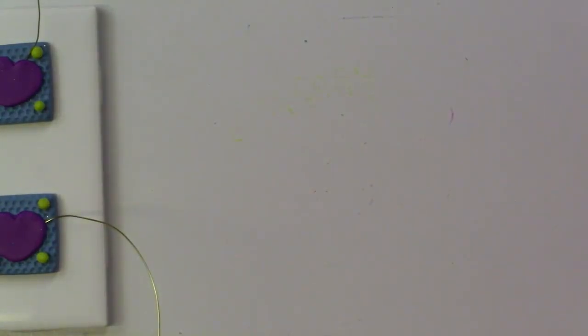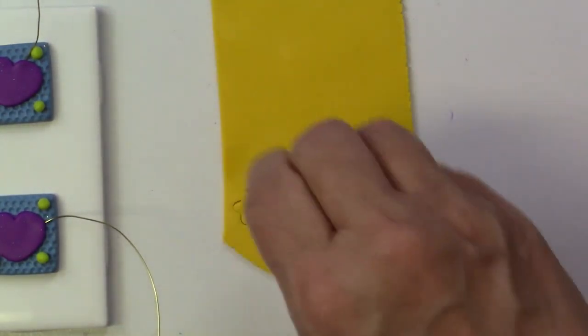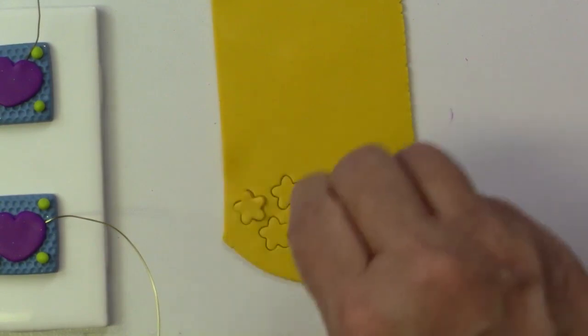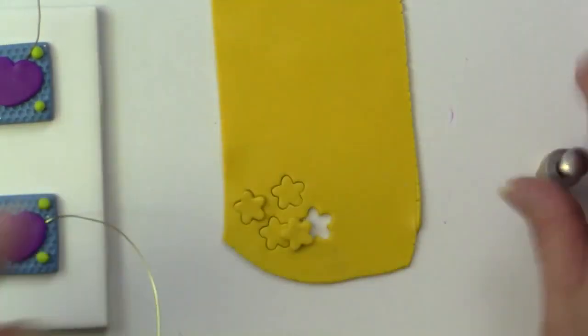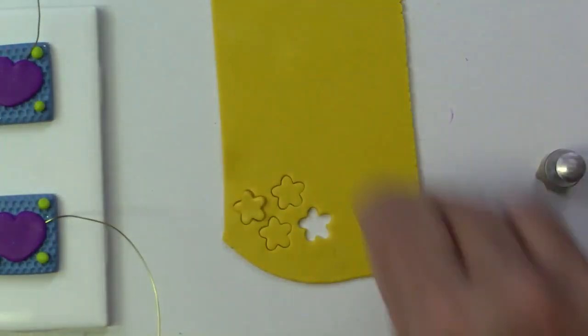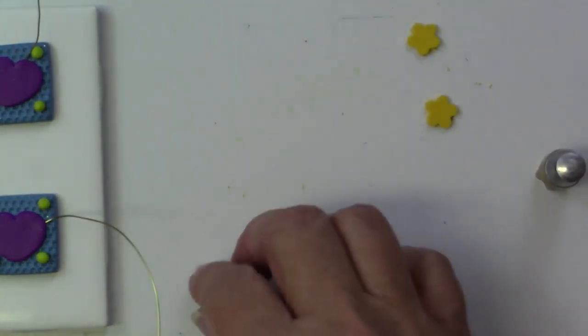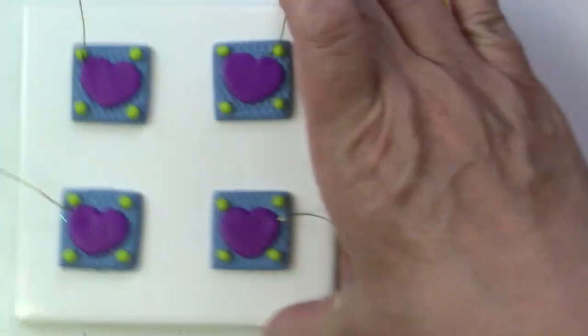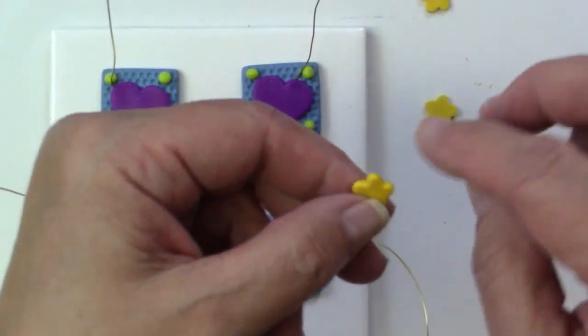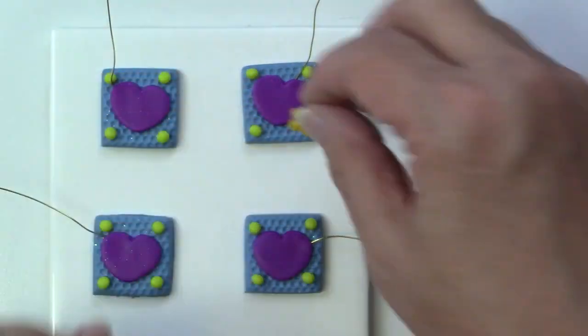Now I decided at the last minute that the hearts needed a little bit more embellishment so I'm going to use this yellow clay and a flower cutter and I'll just cut out four flowers and just cleaning up any of the edges on those flowers and those will go right in the center of each one of the hearts.